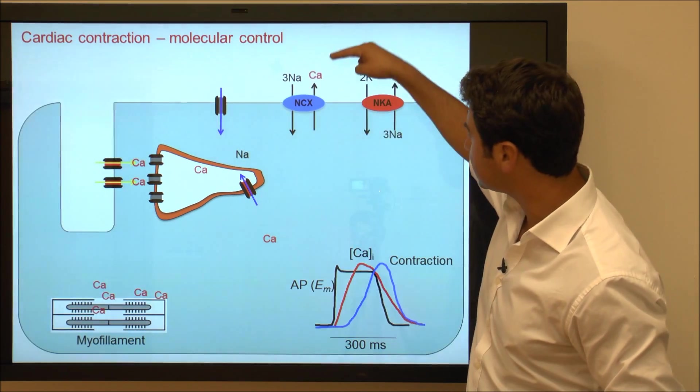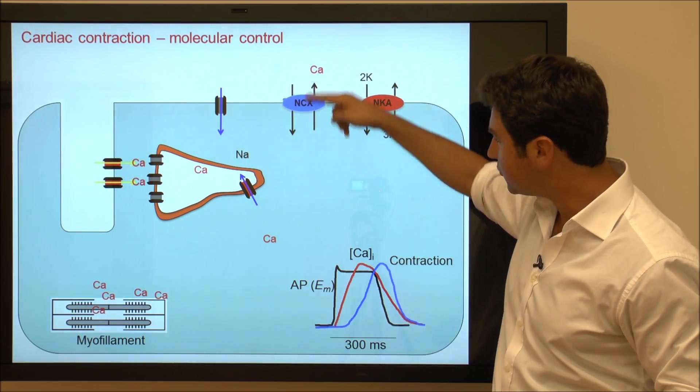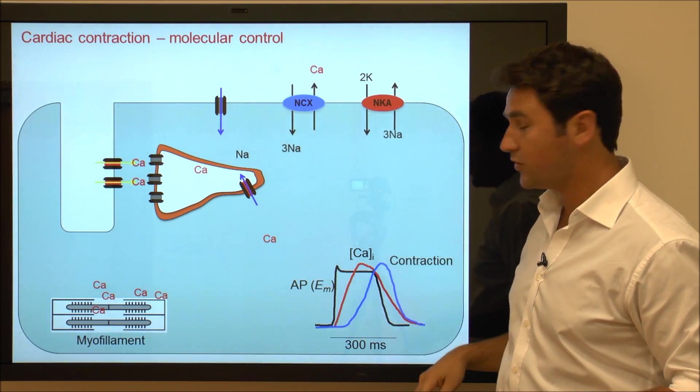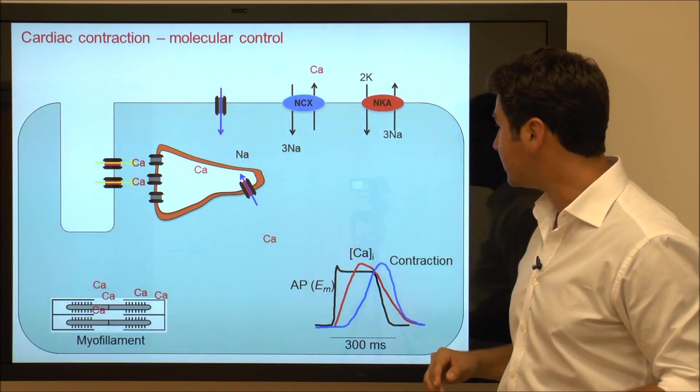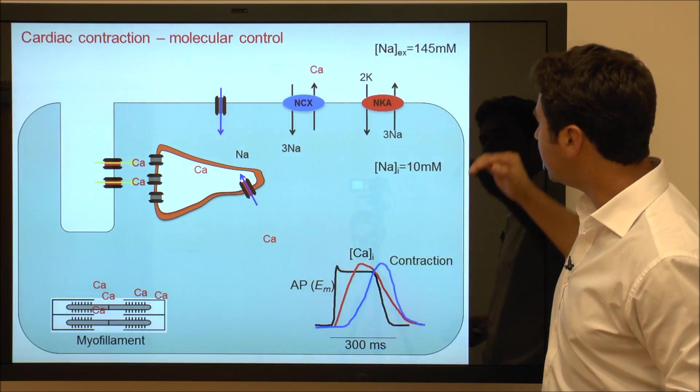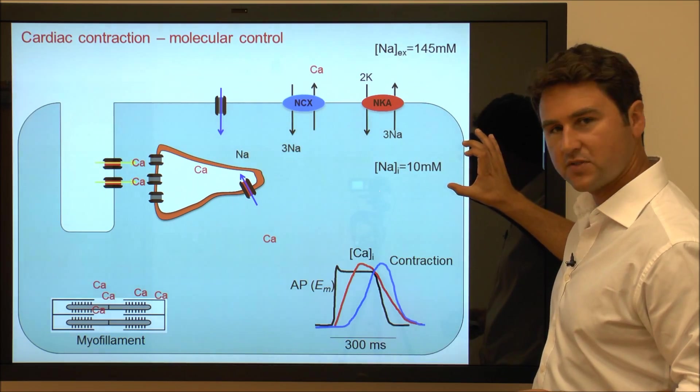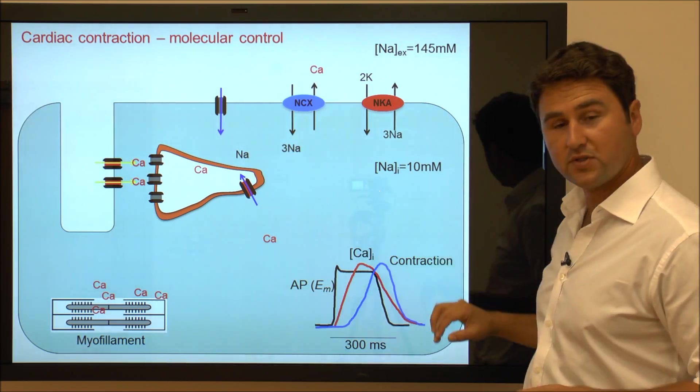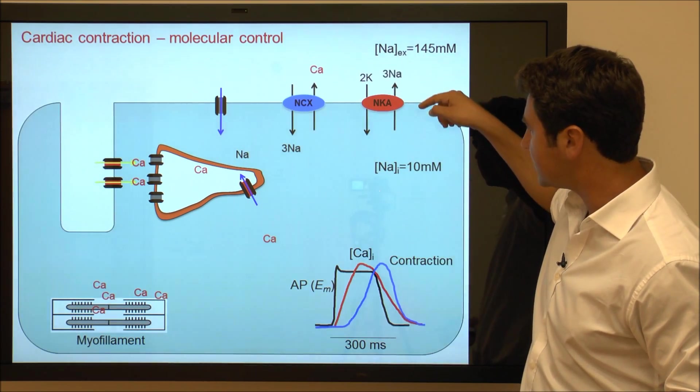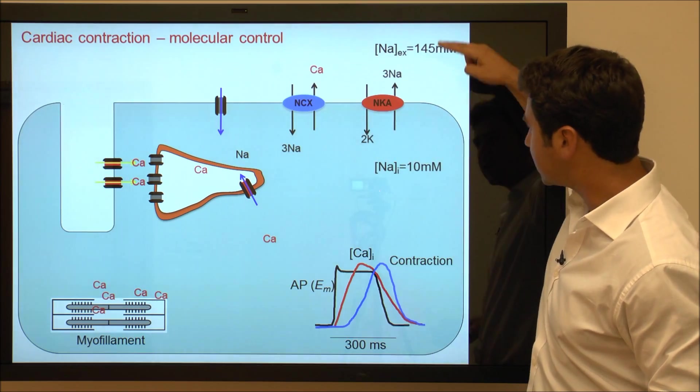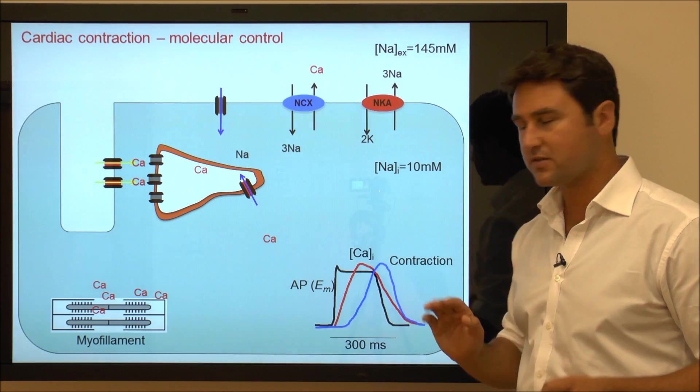Now some of the calcium is removed through the sodium-calcium exchanger which is driven by the sodium gradient. Three sodiums come into the cell whereas one calcium leaves the cell. This sodium gradient is maintained with 10 millimolar sodium on the inside, 145 millimolar on the outside, maintained by the activity of the sodium-potassium ATPase pump, extruding the sodium continuously thus keeping sodium homeostasis.